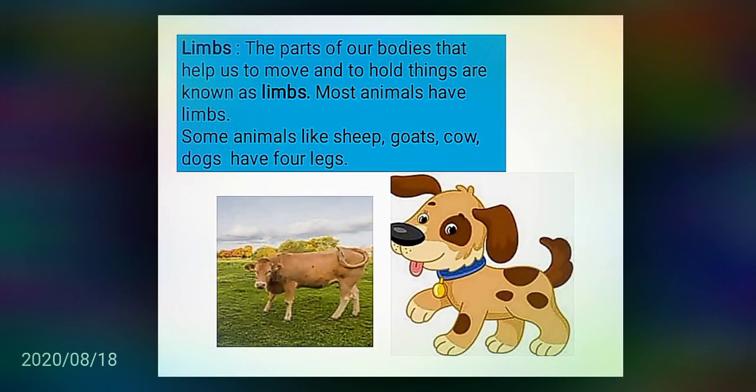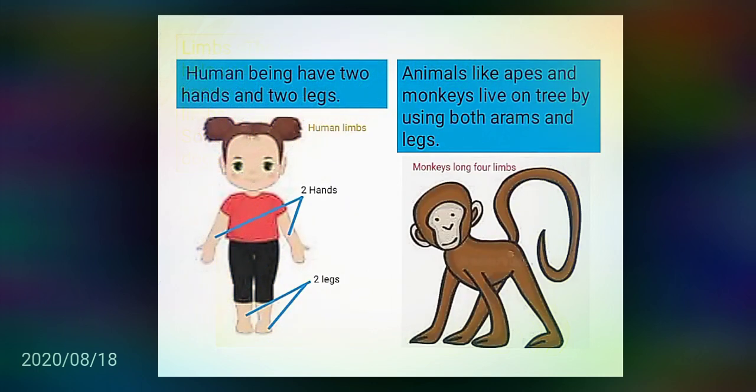Limbs: The parts of our bodies that help us to move and to hold things are known as limbs. Most animals have limbs. Some animals like sheep, goats, cow, and dogs have four legs. Human beings have two hands and two legs. Animals like apes and monkeys live on trees by using both arms and legs.